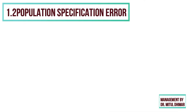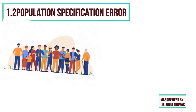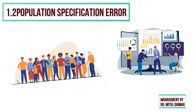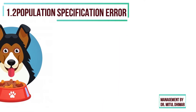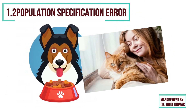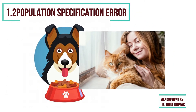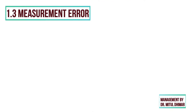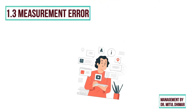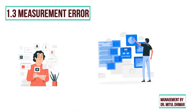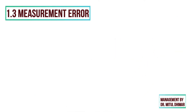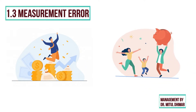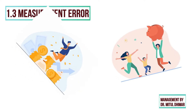Number 2: population specification error. It occurs when an inappropriate population is chosen from which data is to be obtained. For example, a study for a dog food brand that selects people having cats as pets will have a population specification error. Number 3: measurement error. It is the difference between information sought by the researcher and information generated by the researcher. For example, if individual income is sought but the question is worded as annual household income, a measurement error is induced.